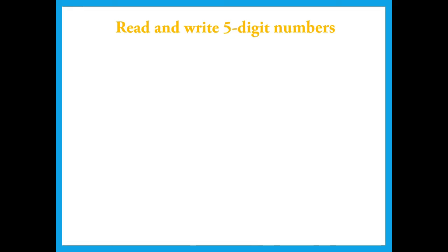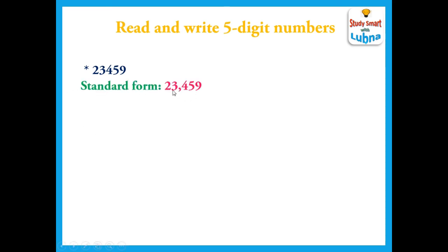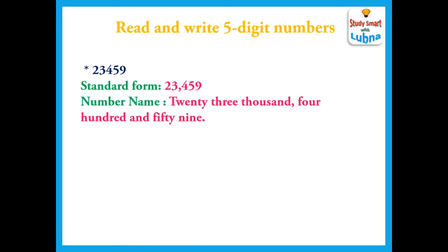Now we will learn how to read and write 5-digit numbers using place value. A 5-digit number is given. We need to do two things: first write the standard form by putting a comma after the periods, and then write the number name. The standard form puts a comma after the ones period. The number name of this 5-digit number is twenty-three thousand, four hundred and fifty-nine.